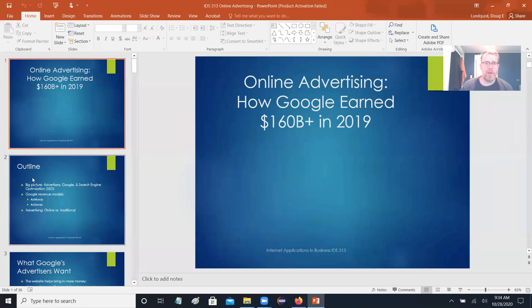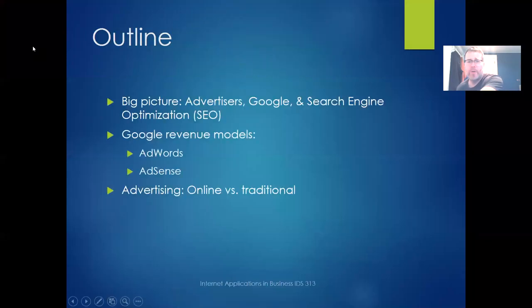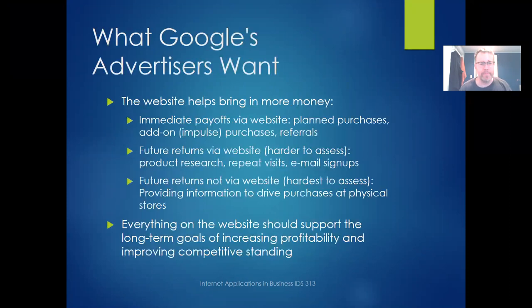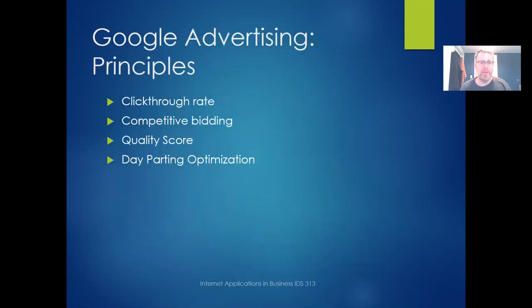So where we left off, we covered a few interesting introductory topics about Google advertising — big picture Google stuff. Today we're basically going to dig into AdWords and AdSense, and then a bigger picture comparison of online versus traditional offline advertising. So the topics we covered previously: spam blogs, click-through rate, competitive bidding, quality score, and day parting optimization.